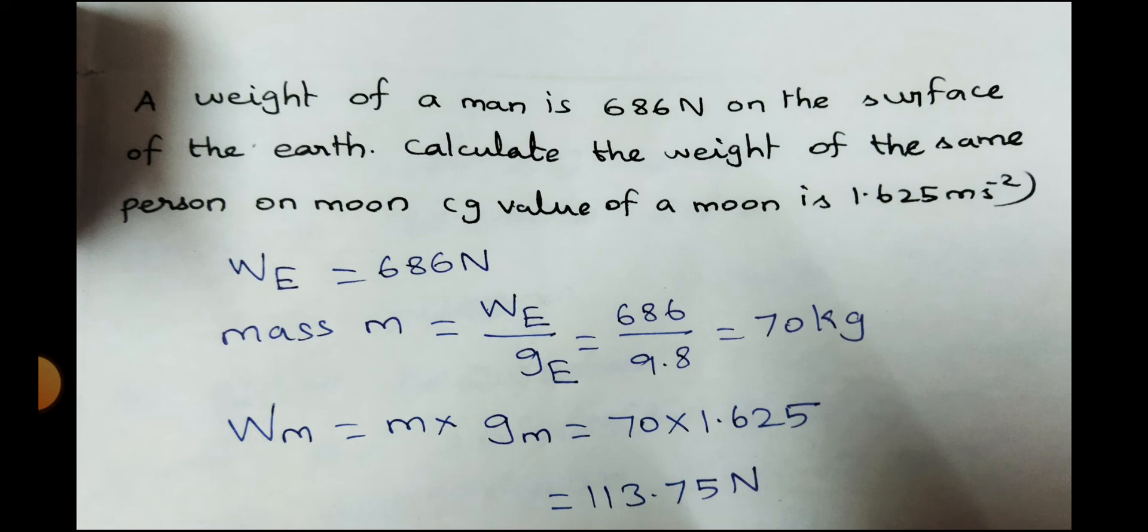Next question: A weight of a man is 686 N on the surface of the earth. Calculate the weight of the same person on moon. G value of a moon is 1.625 meter second power minus 2. So the weight of the earth, 686 Newton. So we want to calculate the mass. The formula is weight is equal to mass into gravity. So WE, the weight of the person in earth divided by the acceleration due to gravity on the earth, 686 divided by 9.8. That is 70 kg.